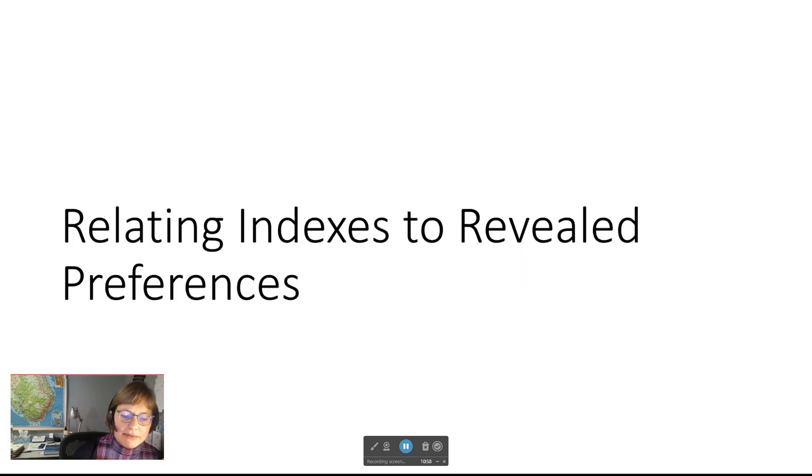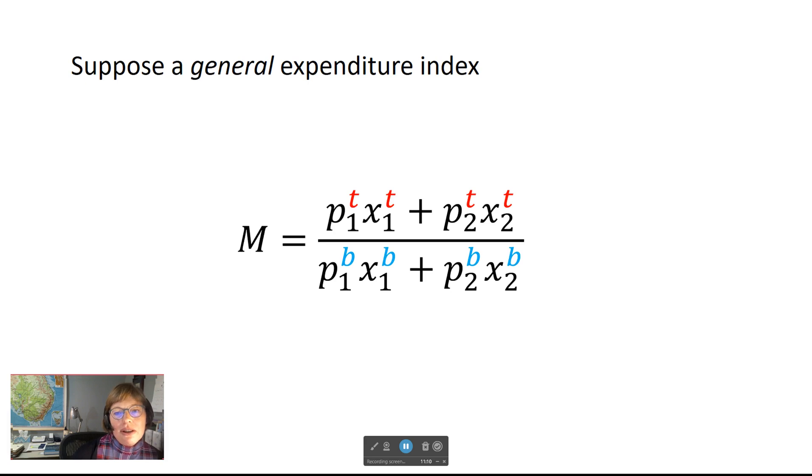Now let's think about what the two different price indexes tell us with regard to revealed preferences. Varian proposes a new index to measure the total expenditure, a general expenditure index. We're calling it M, and it equals the current expenditure in the current period t of both the prices and demand information from that period, compared to the total amount spent in a previous period using the base period prices and demand information. Essentially, this price index is the ratio of the expenditure in period t to that in the base period b.